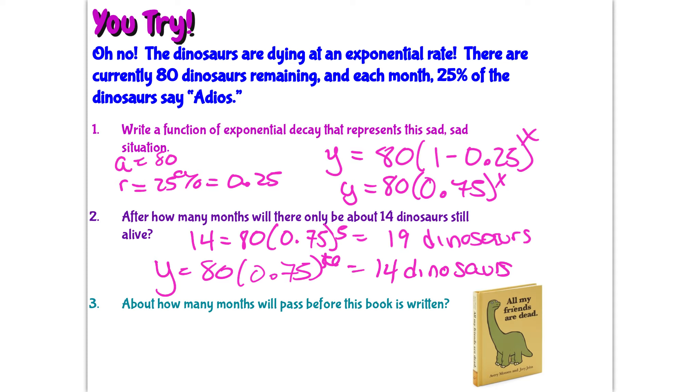About how many months will pass before this book is written? All my friends are dead. That means there's only one dinosaur left. So how many months until one dinosaur left? Let's try to the 8th power. There are still 8 dinosaurs left after 8 months. Let's try 10th power. To the 10th power, there's still 5 dinosaurs left.